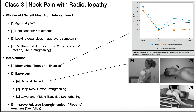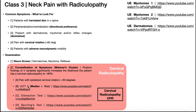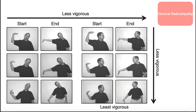You can also improve adverse neurodynamics with flossing exercises that come out of the upper limb tension test. If the patient initially has a lot of issues with the upper limb tension test, that's an indication to try flossing. There are six sets of flossing exercises with a start and end position — you basically just alternate between those two positions for each set.